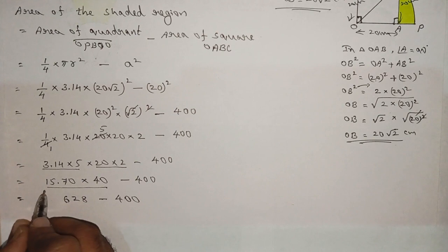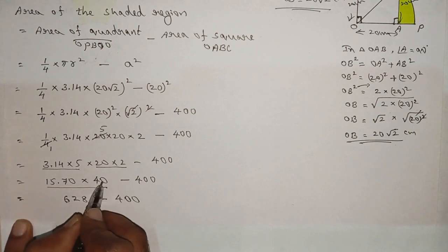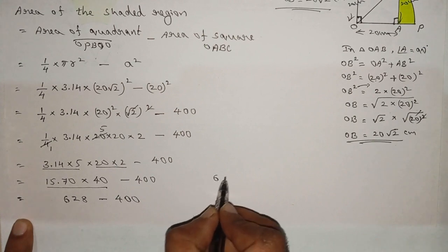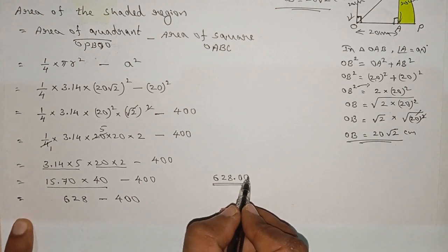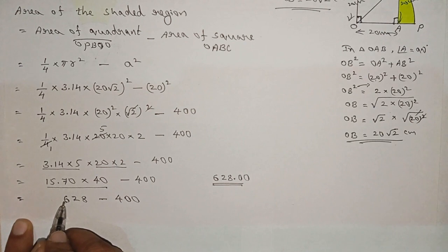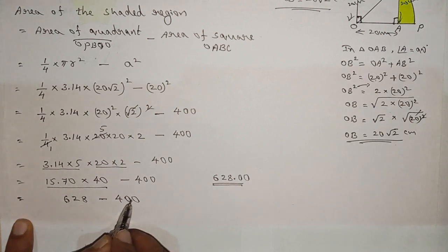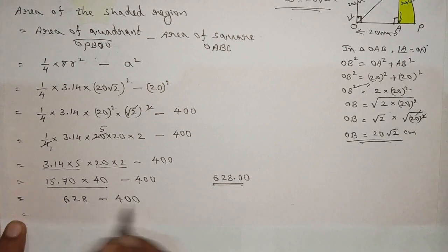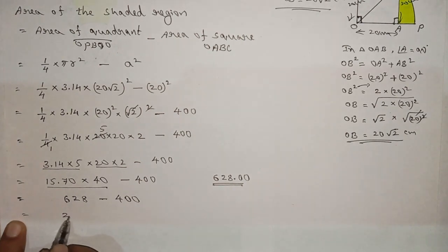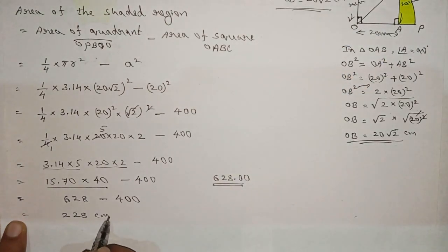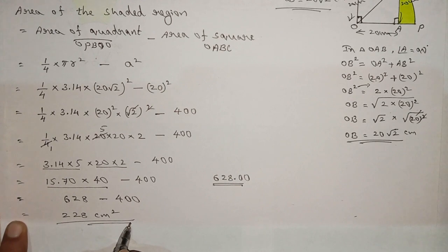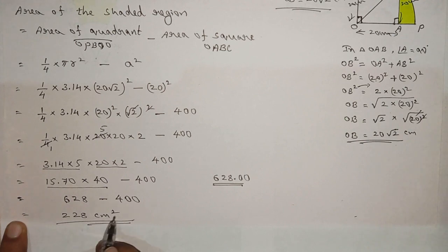628 minus 400 equals 228. The area of the shaded region is 228 cm squared. This is the answer to the 13th problem: 228 cm squared.